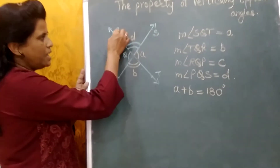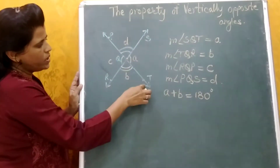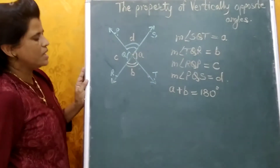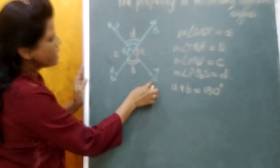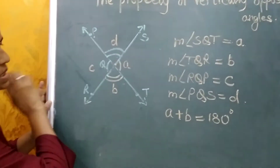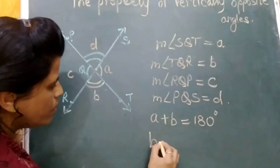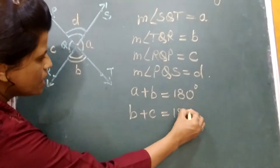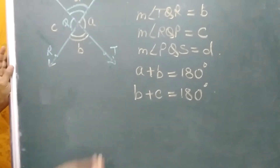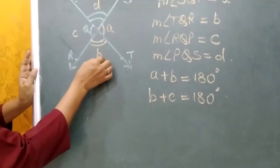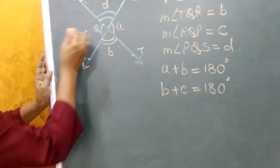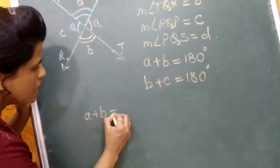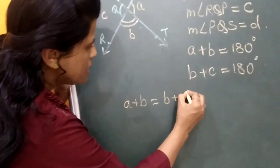Now likewise, line PQT forms a linear line, so here we have a linear angle. Therefore B plus C is equal to 180 degrees. Since A plus B equals 180 and B plus C equals 180, we get A plus B is equal to B plus C.